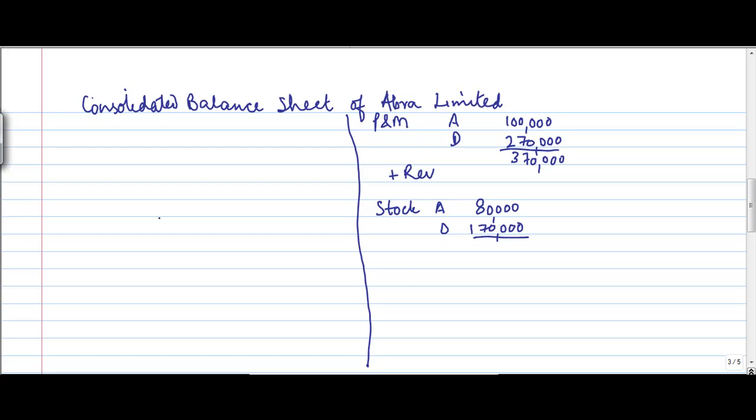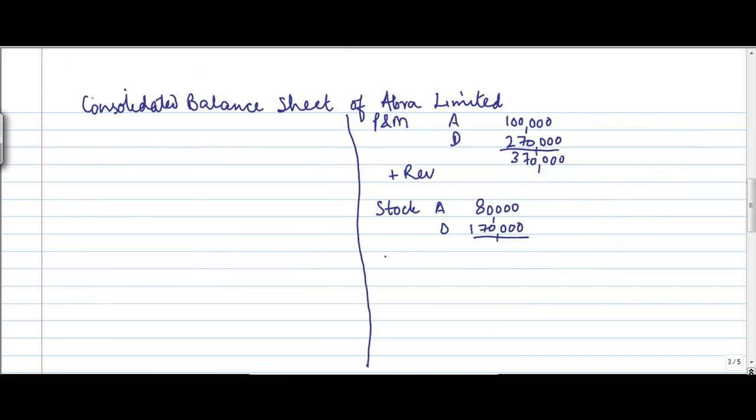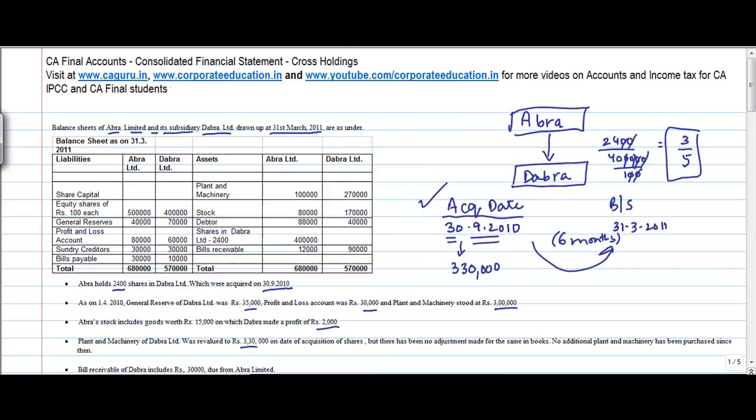Debtor. 88,000, 40,000, there is no adjustment here. 88,000, 40,000. This is for Abra, this is for Dabra. And this I can put in the outer column right away because there is no adjustment which is envisaged here.